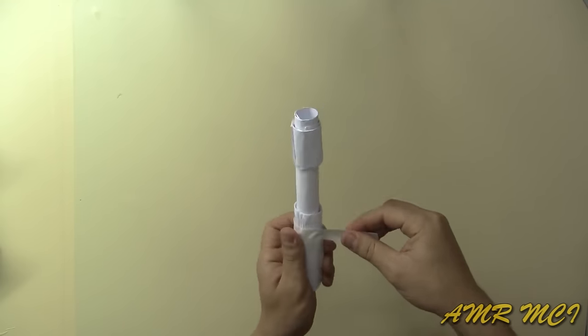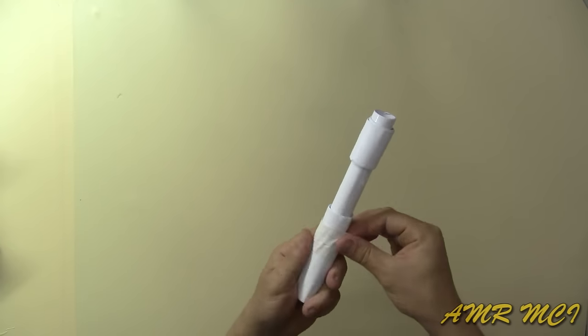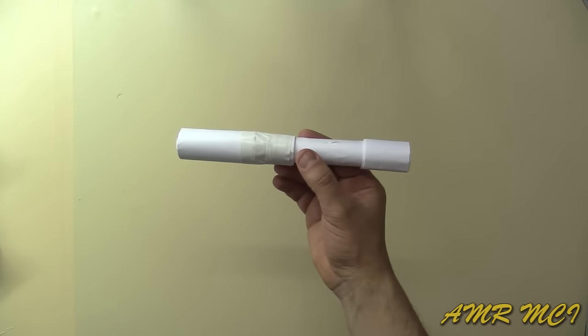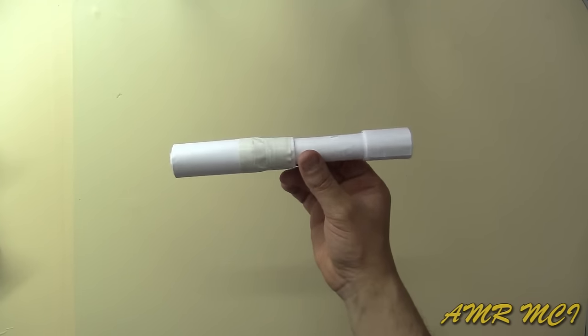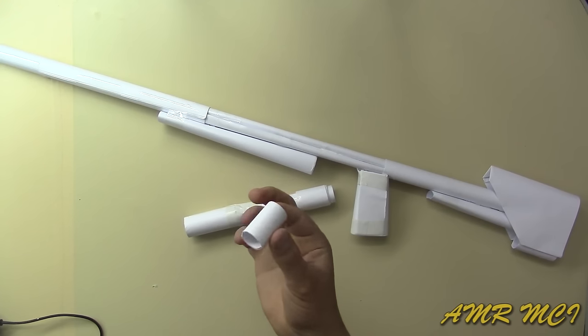You can also put some tape around it to hide the connecting lines between the rolls. Take the piece of roll that we kept before and glue it to the middle of the scope.